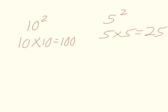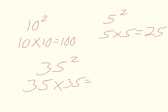One other example: if we had 35 squared, this squared is telling us we need to multiply this by itself. So 35 times 35, which equals 1,225. So 35 squared is equal to 1,225. It's important to know what to do with squared units for converting squared units of measure.